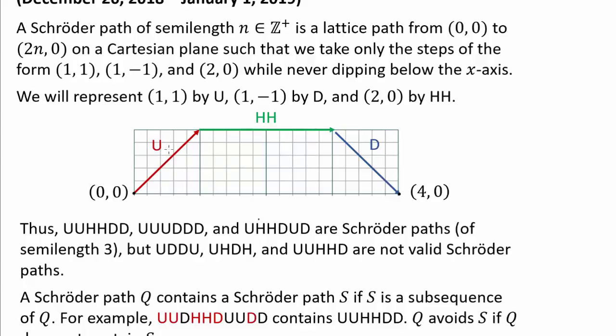We never dip below the x-axis. We will represent (1,1) by U, (1,-1) by D, and (2,0) by HH as shown.